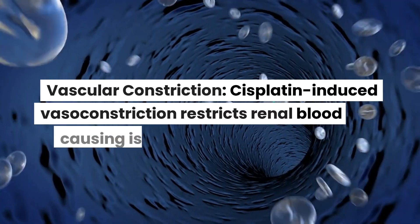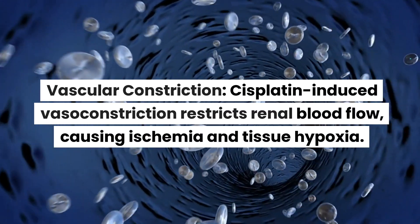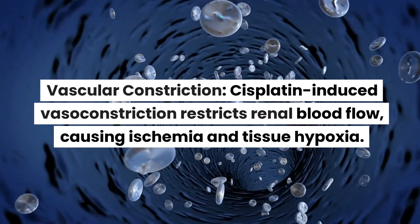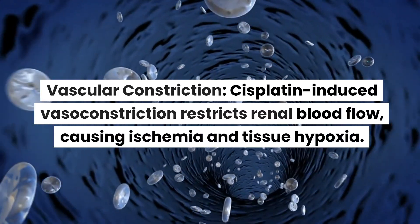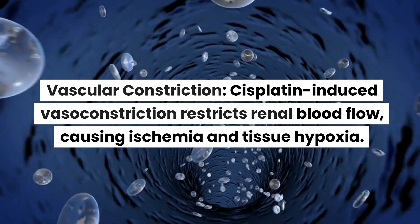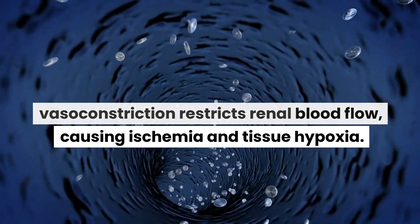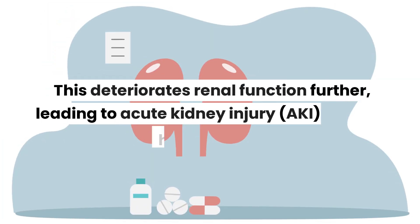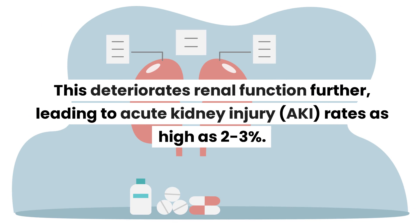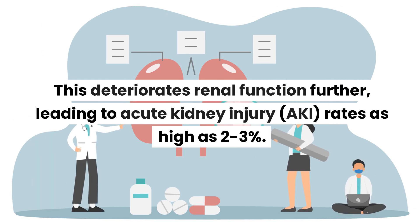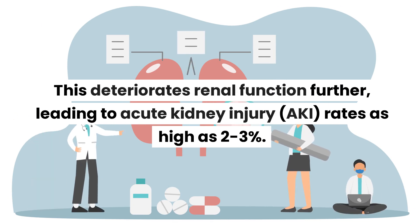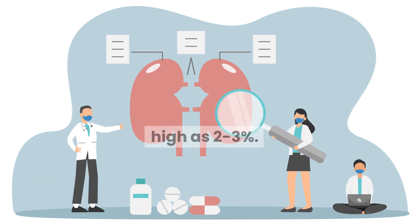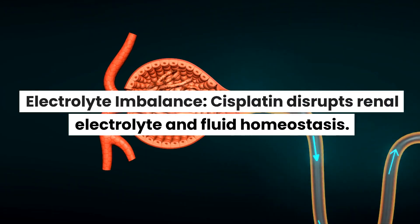Vascular constriction. Cisplatin-induced vasoconstriction restricts renal blood flow, causing ischemia and tissue hypoxia. This deteriorates renal function further, leading to acute kidney injury (AKI), with rates as high as 2-3%.